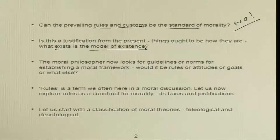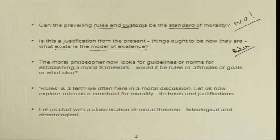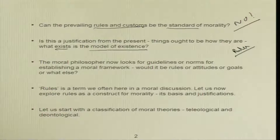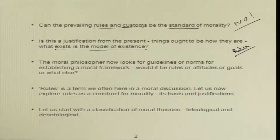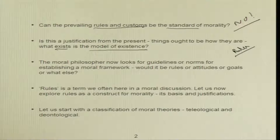When we talk about moral rules, we are talking about something fundamental. How do we arrive at these moral rules is the immediate question. For philosophical clarity, we shall distinguish between the rules, their source, and how we arrive at them. The moral philosopher looks for guidelines or norms for establishing a moral framework — would it be rules, or attitudes, or goals? Till now we have been talking about consequentialism, which has made consequences the frame of reference. Now let us explore rules as a construct for morality, its basis and its justifications.